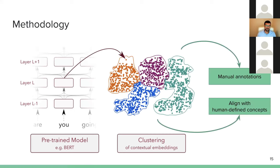To reiterate: we have a pre-trained model and a large set of sentences. We give the sentences to the model — we are not training it — we take a pre-trained model, give the sentences, and extract activations from different layers. For every layer, we run clustering on the contextualized embeddings. Contextualized means every word occurrence, based on its context, will have a different representation, and depending on that context it may end up in different clusters. Once we have the clusters, we manually annotate them or align them with human-defined concepts to understand how the model has developed its latent space for language.